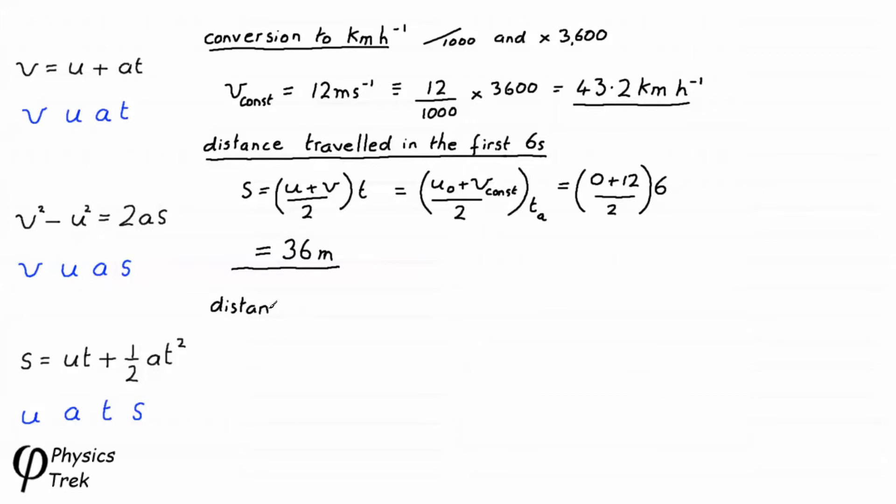Now to calculate the distance traveled in the 30 second period. As before we use distance equals average velocity multiplied by time taken. In terms of our symbols, this is V_const times t_const. Putting in the numbers: V_const is 12, t_const is 30. 12 times 30 gives us 360 meters.